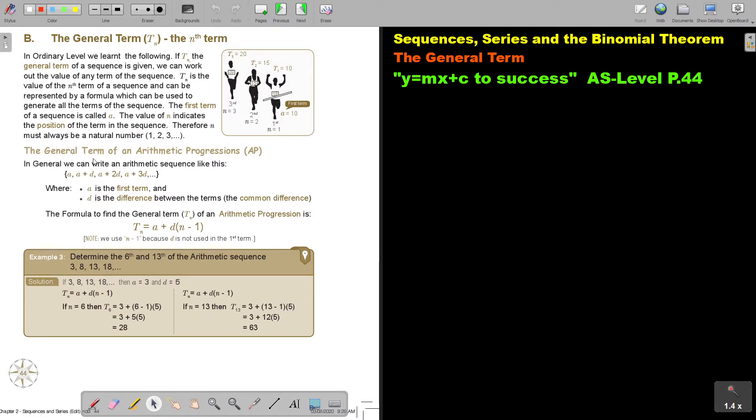So the general term of an arithmetic progression, in general, we can write an arithmetic sequence like this. A, then A plus D, then A plus 2 times D, A plus 3 times D. Where A is the first term, D is the difference between the terms, the common difference. The formula for the general term of an arithmetic progression is this. Now, sometimes I put D at the back, sometimes in front, it doesn't really matter. I just think you are more used to multiplying with something that is in front of the bracket. So note that because D is not used in the first term, we use N minus 1 because D is first coming in the second term.